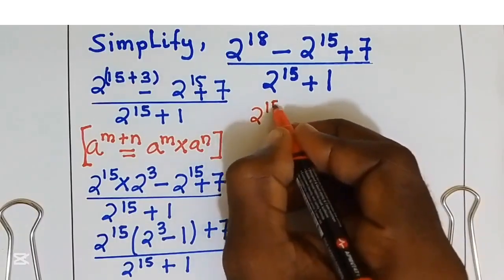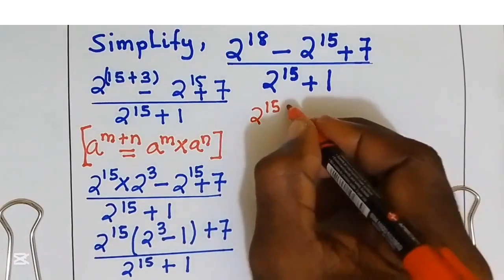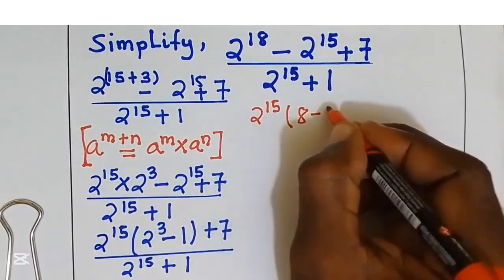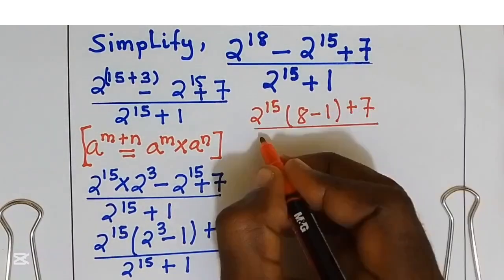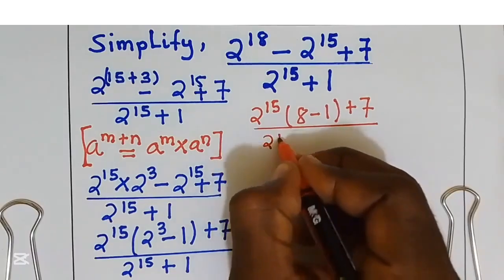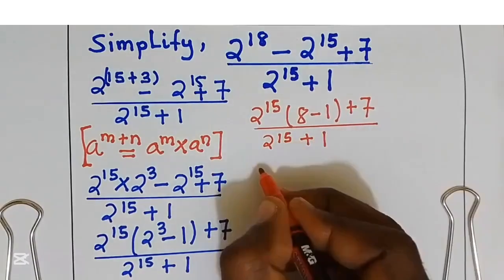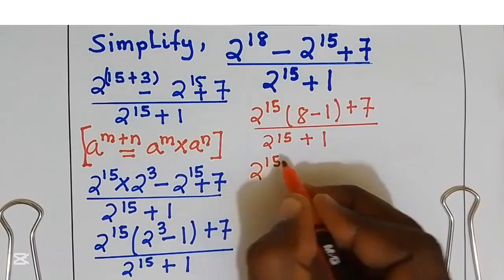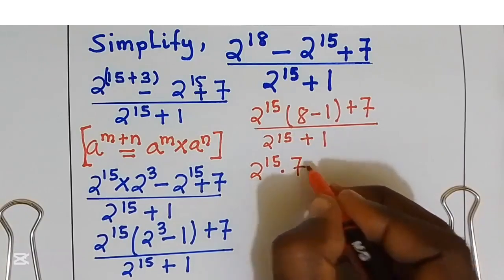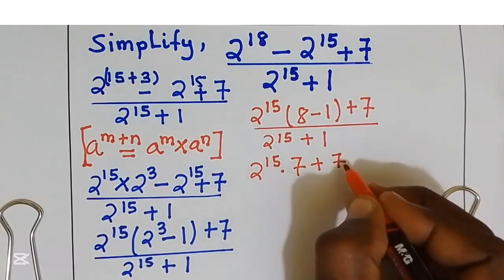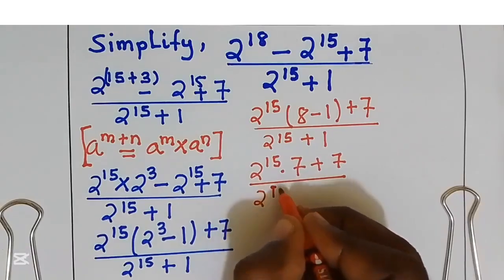2 power 15 multiplied by — 2 power 3 is the same as 8 — so we have 8 minus 1 plus 7, which gives 7 multiplied by 7, plus 7, all over 2 power 15 plus 1.